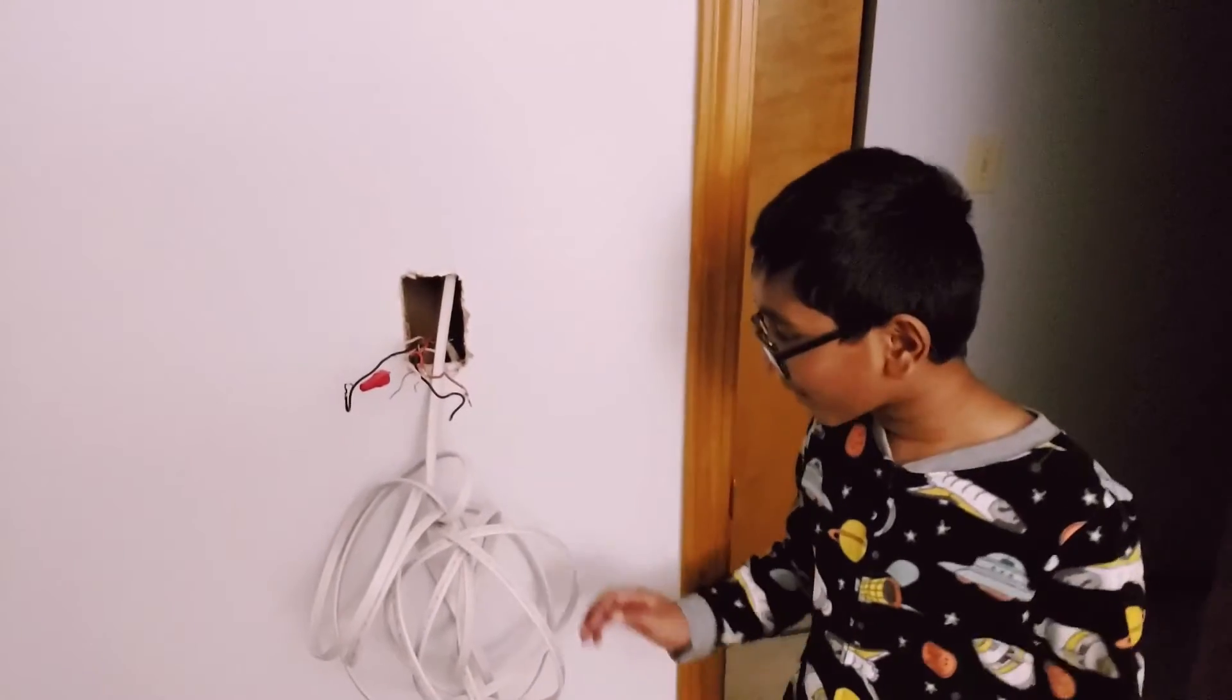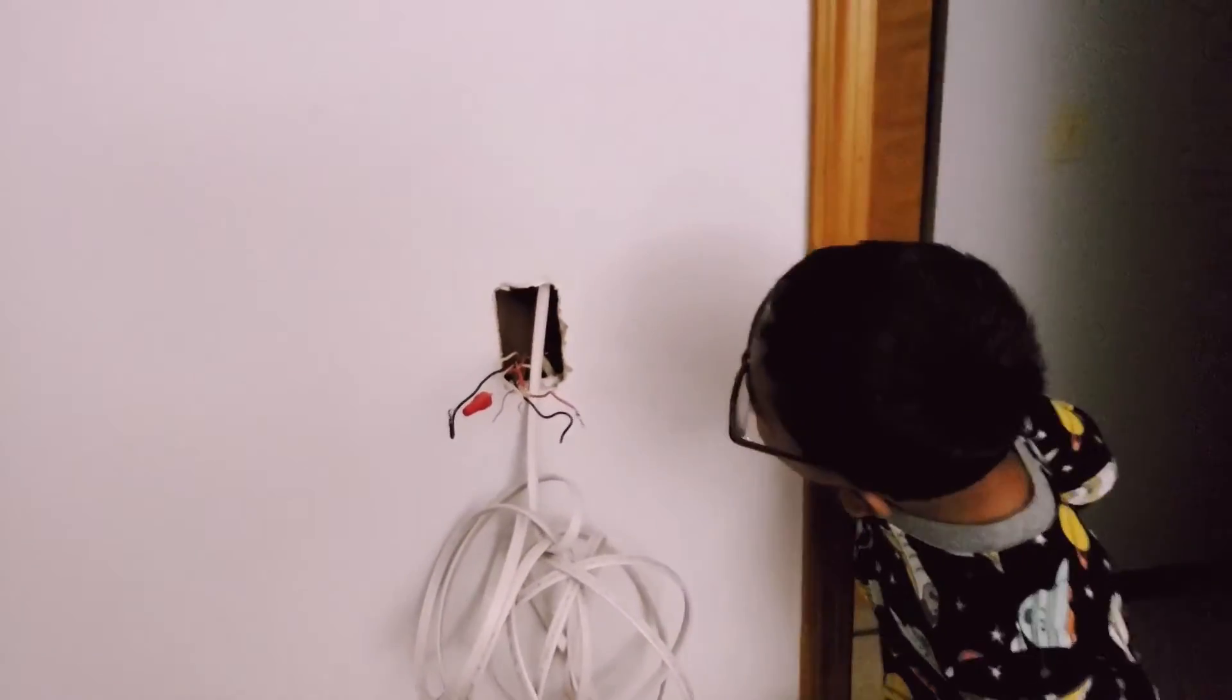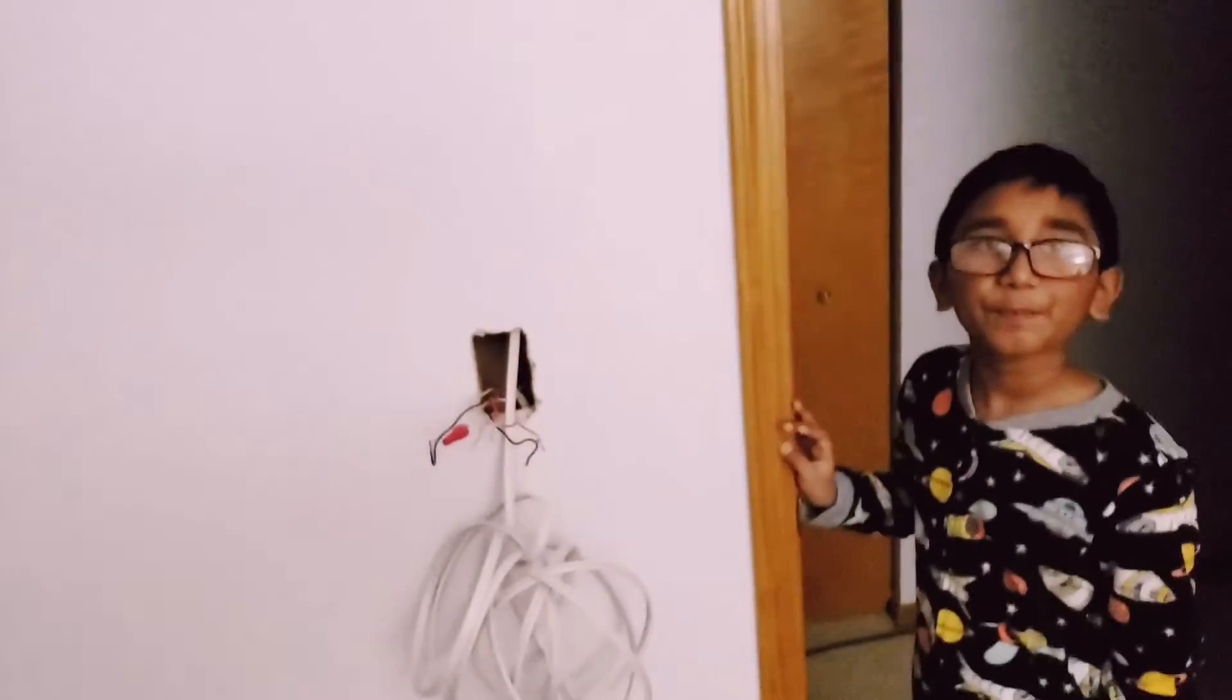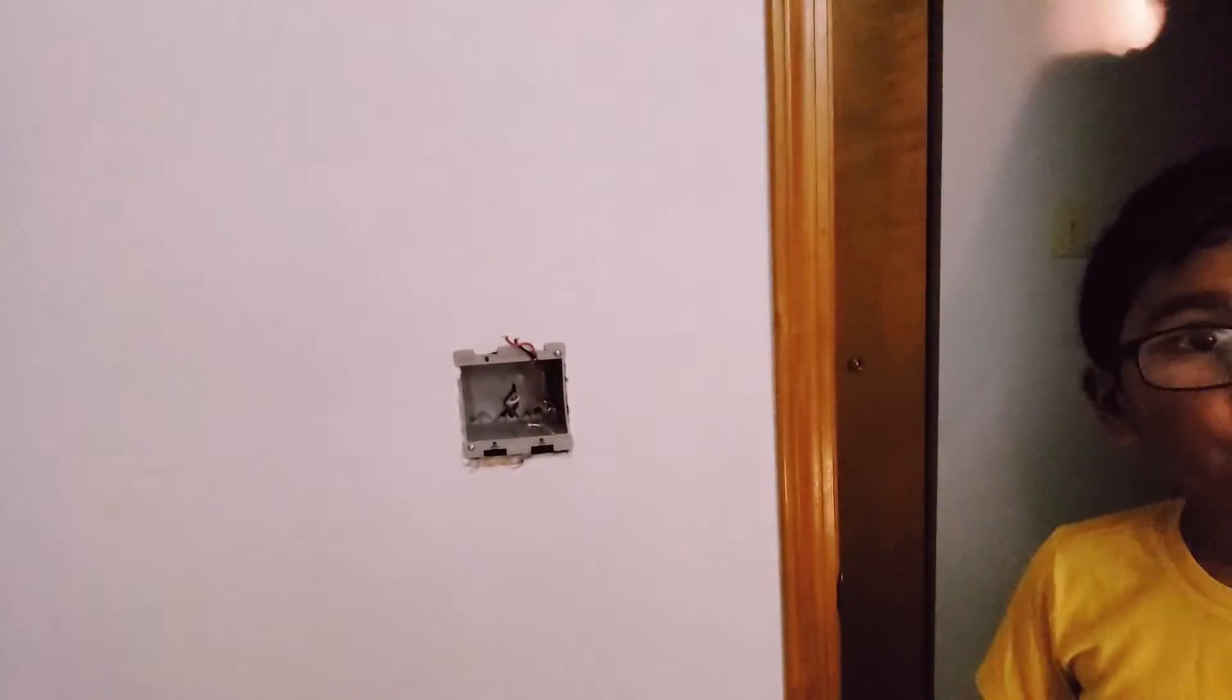We will splice the wires, put them together to test it, and then after that I think we're going to put it in the junction box. So if you guys can see, we got our gray junction box in. We kind of like it. We're going to finish this up and we'll show you the finished part.